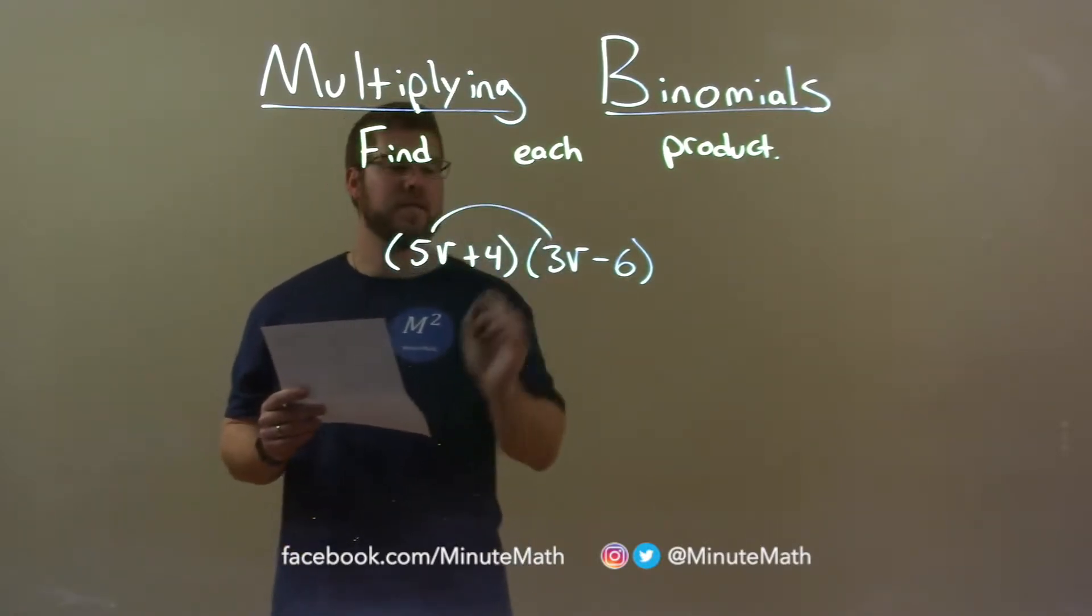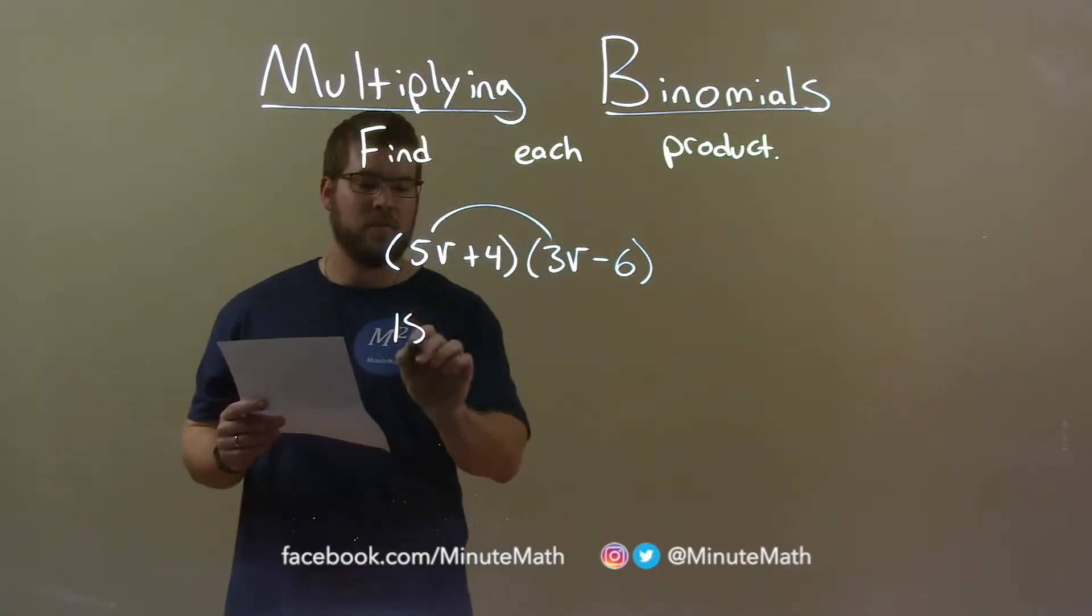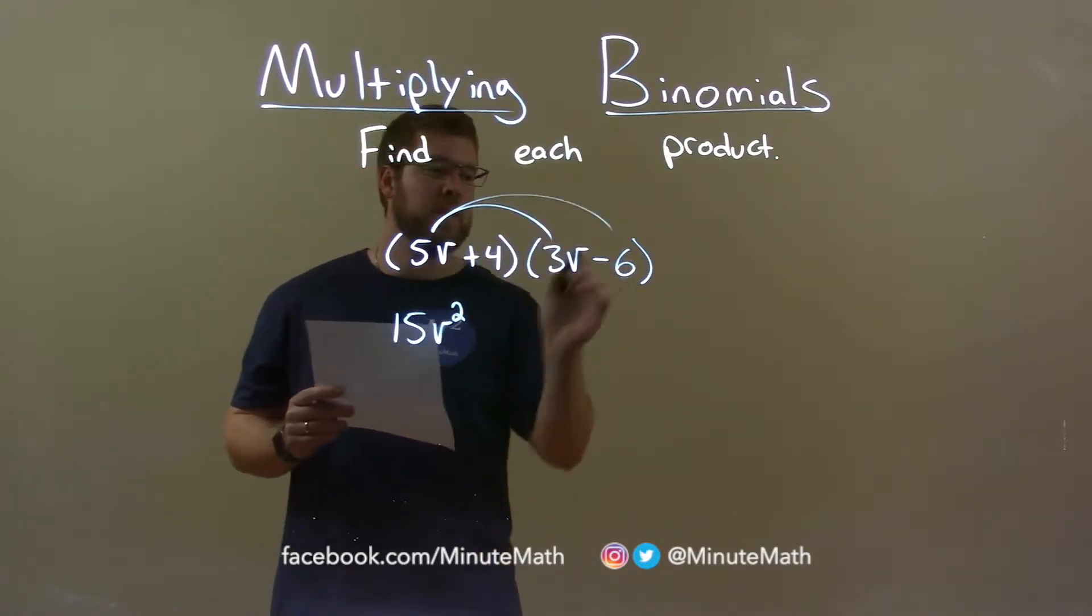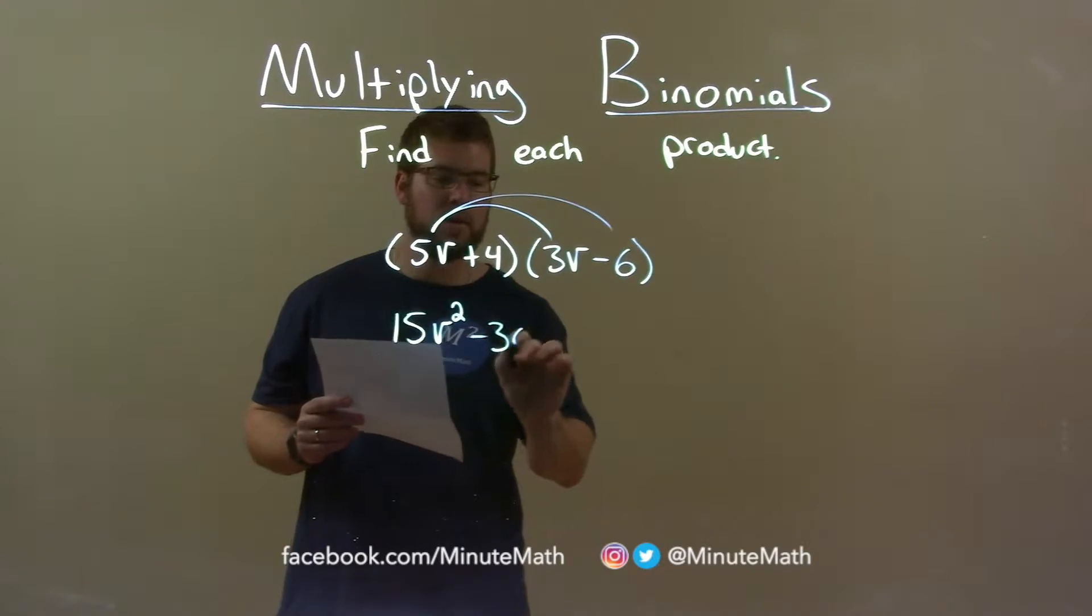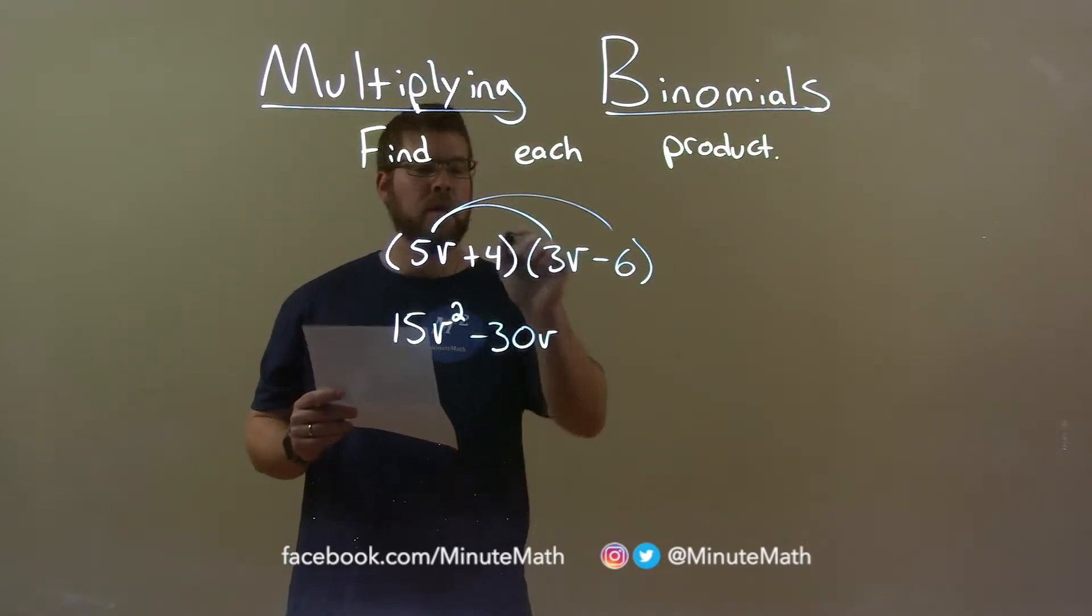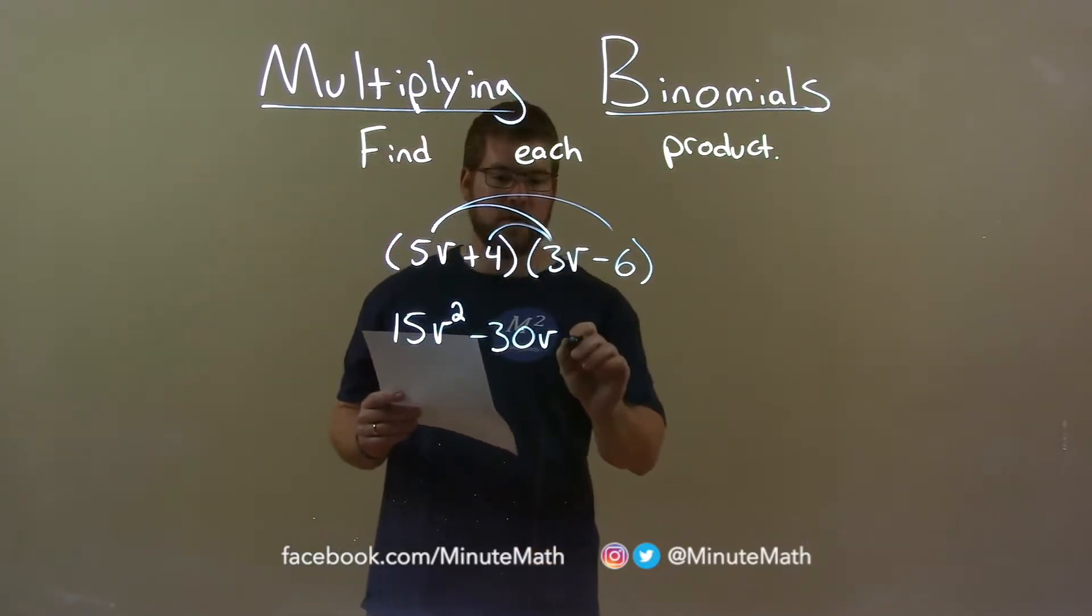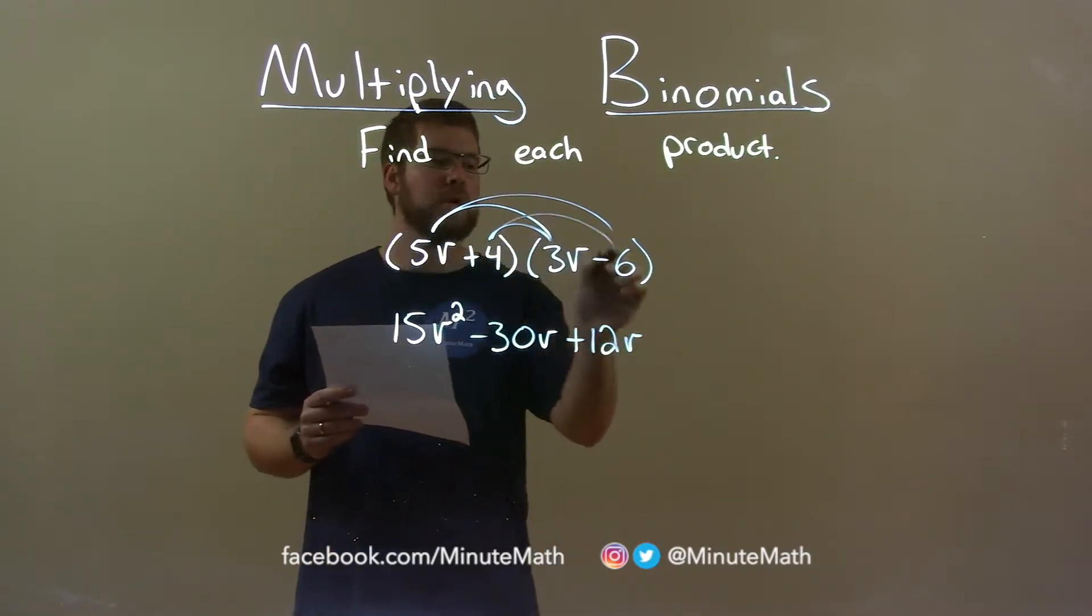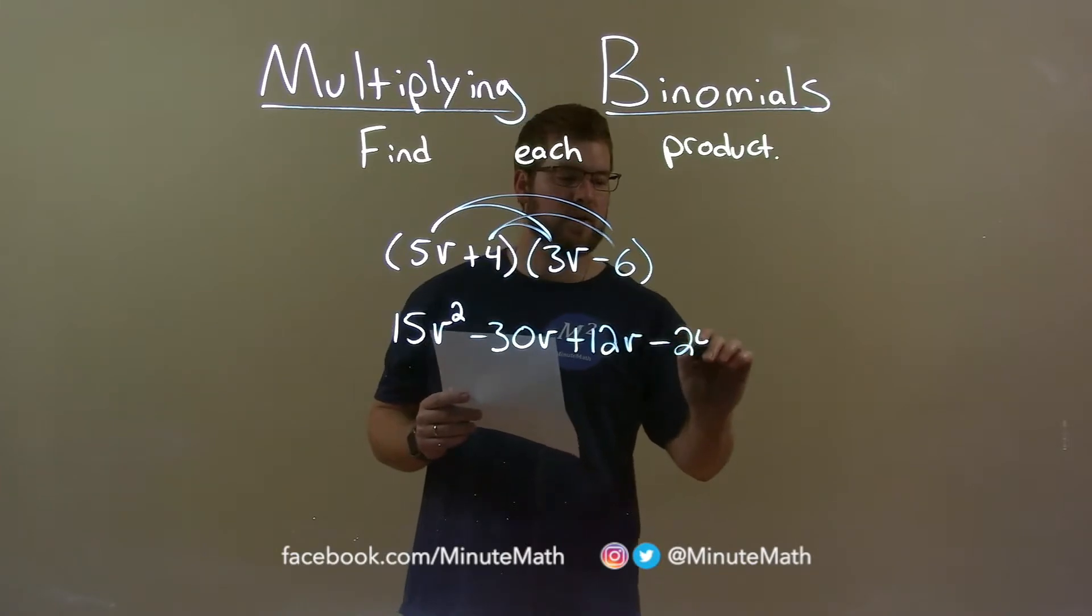So, 5V times 3V is 15V squared. 5V now times minus 6 is minus 30V. 4 times 3V is 12V. And 4 times minus 6 is minus 24.